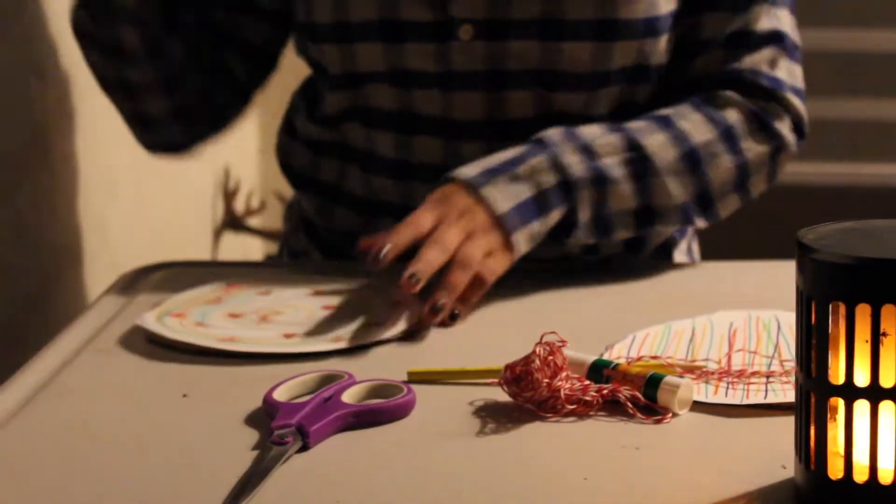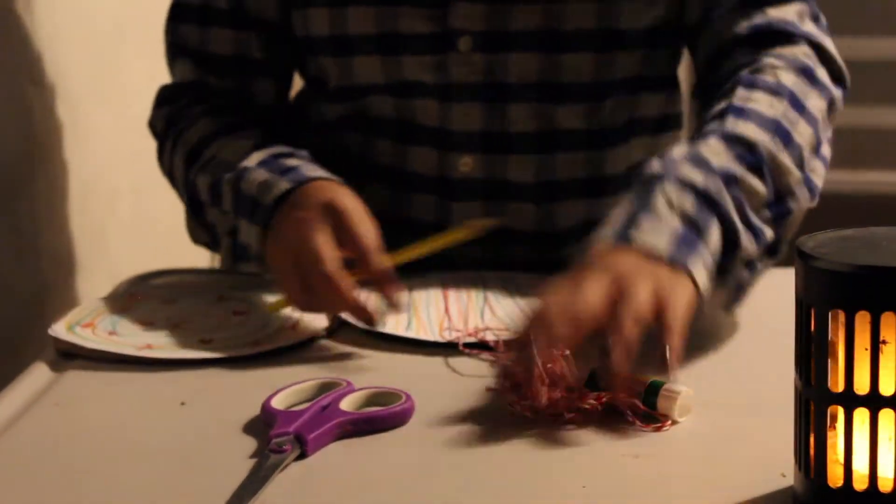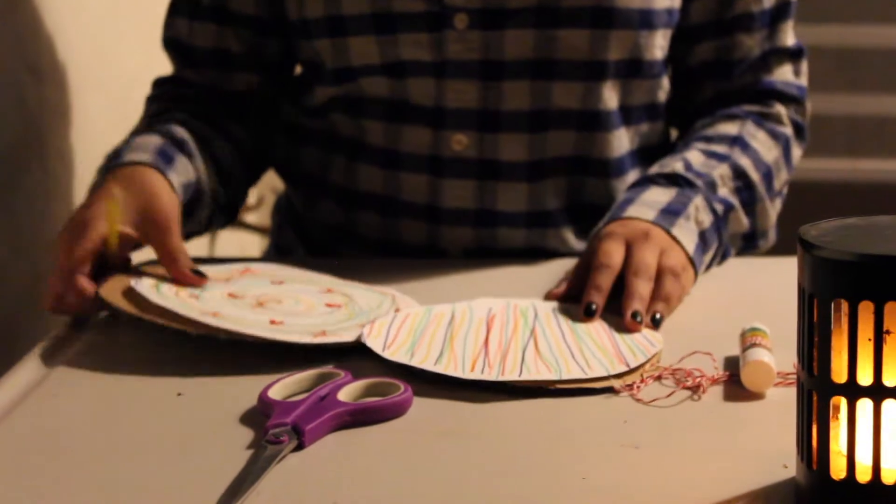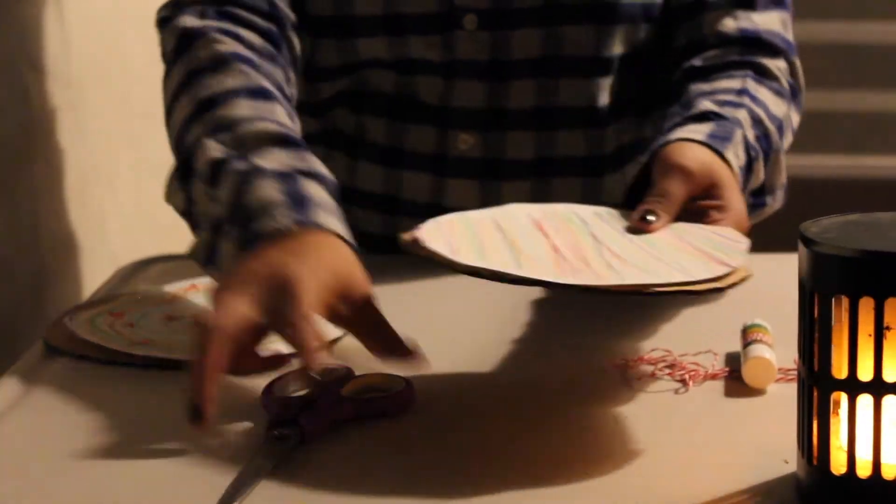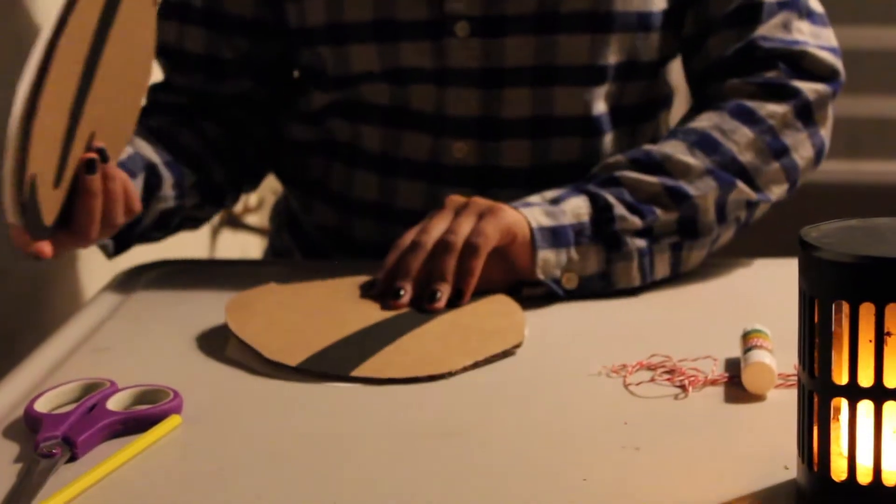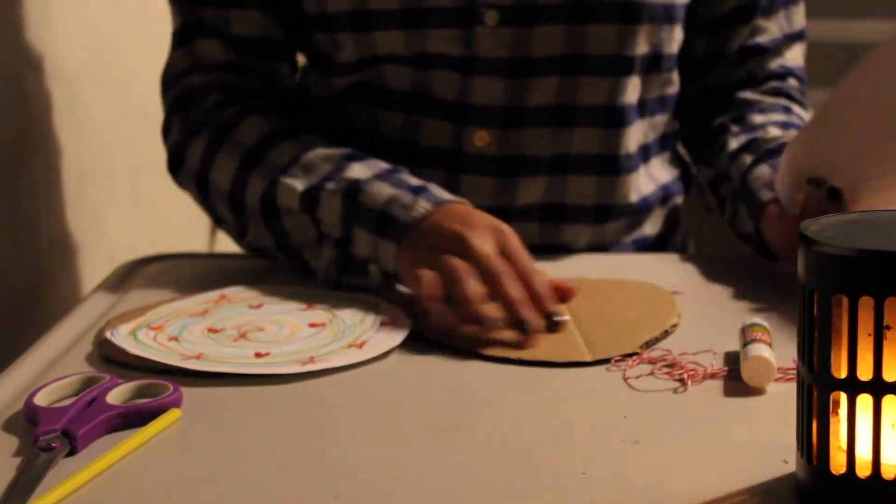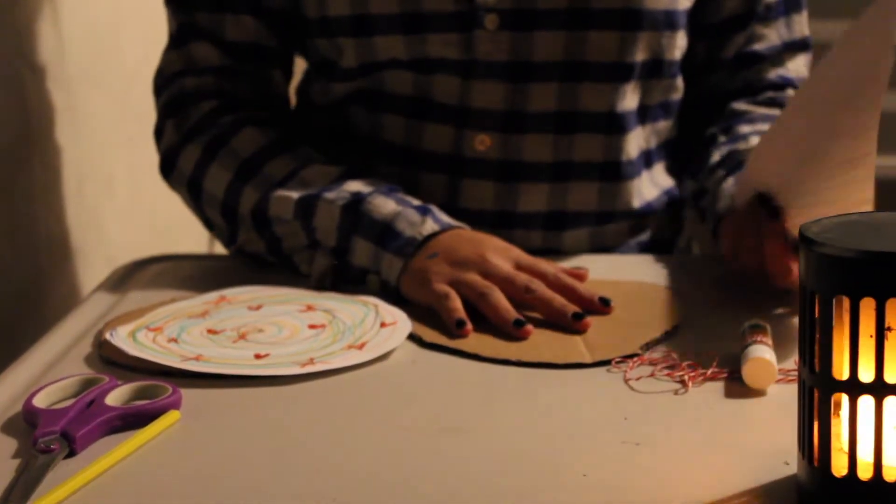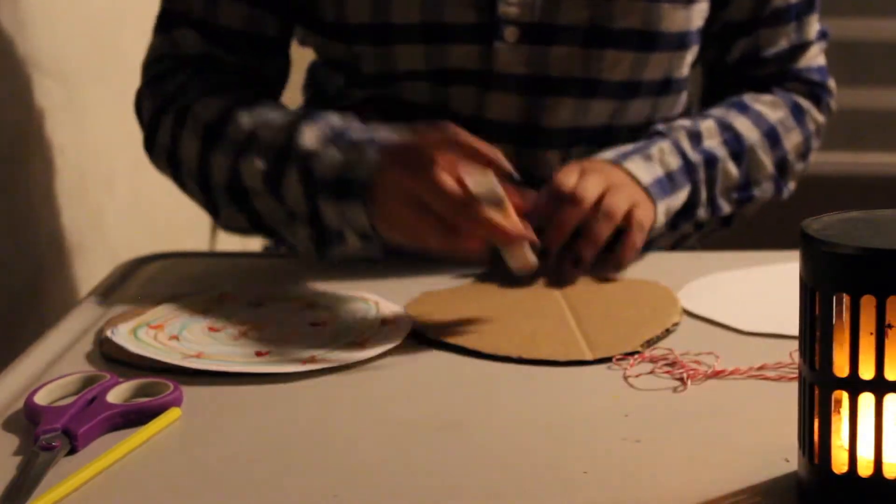So now that I'm all done drawing my patterns and all of my lines on my circles that were in my paper, I went ahead and I cut them out. And what we're going to do is glue our paper circles onto our cardboard circles. I'm going to be using a glue stick, but you can use liquid glue as well.